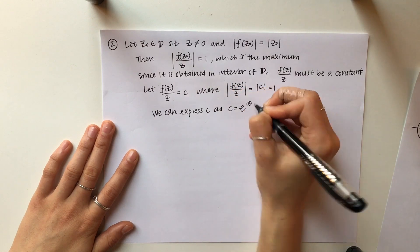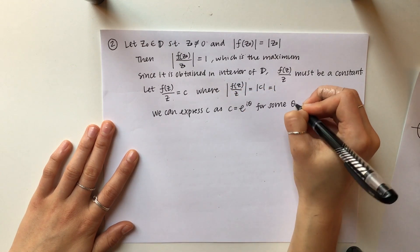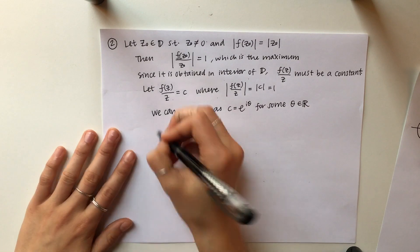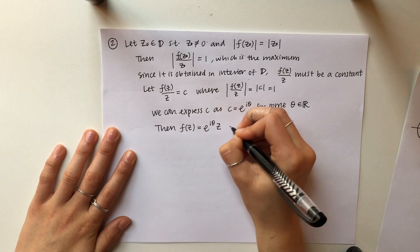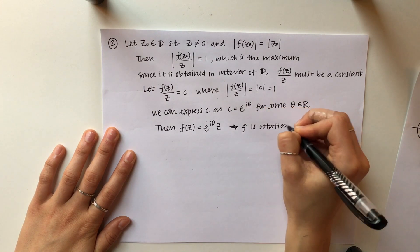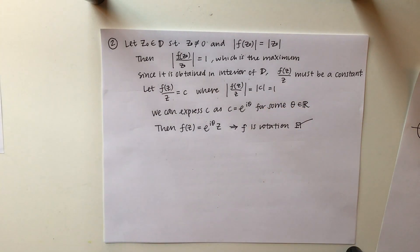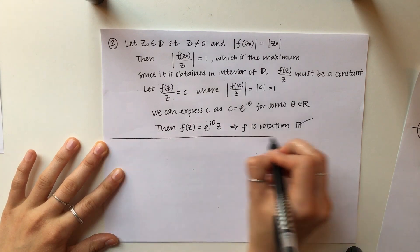Since the modulus of C equals 1, and we're working with a complex number, we can express C as e to the i theta for some real theta. So then we can rewrite F of Z as e to the i theta Z, which clearly shows that F is a rotation, which is what we wanted.